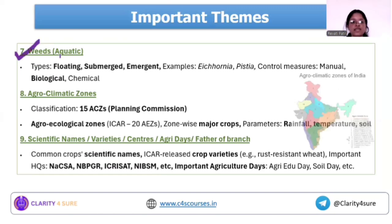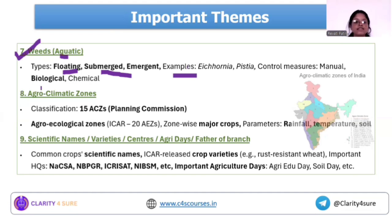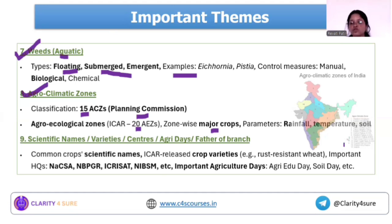Next is weed. As said, floating aquatic weed was the question in 2024. Just go and cover submerged and emergent weeds and some basic examples of those weeds, and go through the basic classification. Next is the agroclimatic zone — the numbers 15 and 20 are important: the number of agroclimatic zones according to the Planning Commission and the number according to ICAR. In those particular zones, have a look over the major crop and soil type — for example, they could ask: alluvial soil is found in which zone, or the wheat-rice cropping pattern is followed in which zone.